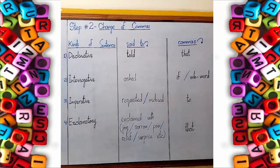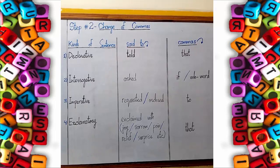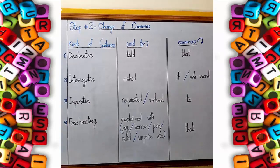This is the figure before you. You can pause the video here and draw the same figure in your register or rough copies — it will help you when making changes in direct sentences and converting them to indirect sentences. So: declarative — change 'said to' into 'told' and commas into 'that'; interrogative — change 'said to' into 'asked' and commas into 'if' or wh-word; imperative — change 'said to' into 'requested' or 'ordered' and commas into 'to'; exclamatory — change 'said to' into 'exclaimed with joy, sorrow, pain, relief', etc., and commas into 'that'.